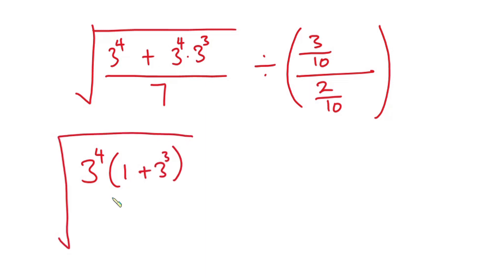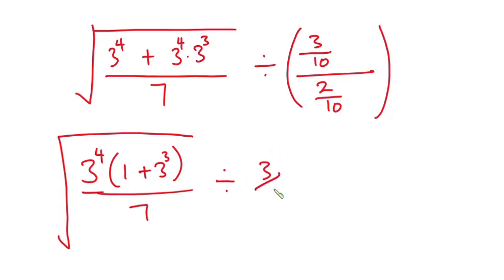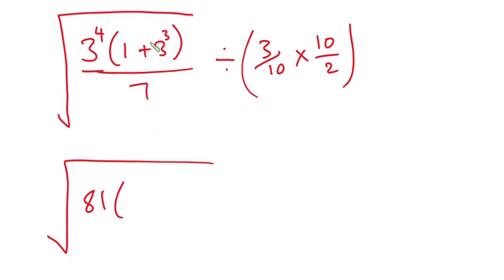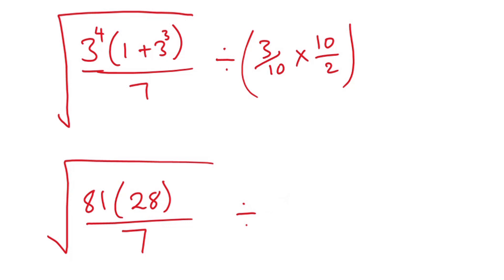The whole thing is divided by seven, and this is also divided by 3 over 10 times 10 over 2. Then we have the square root of three to the fourth power, which is 81, times three to the third power, which is 27, plus 1 is 28, then divided by 7.